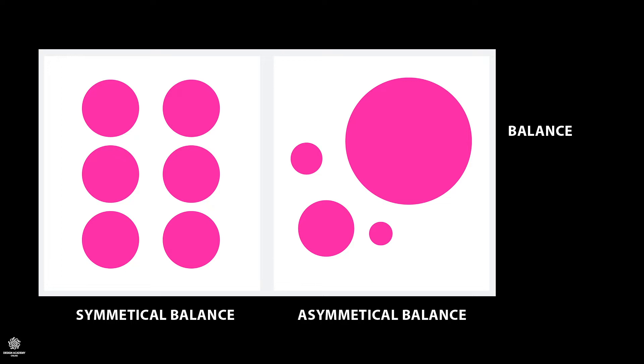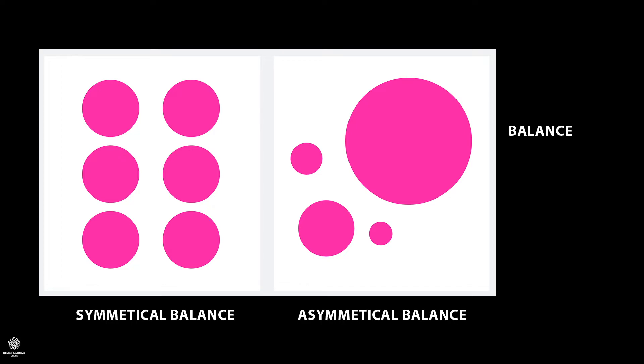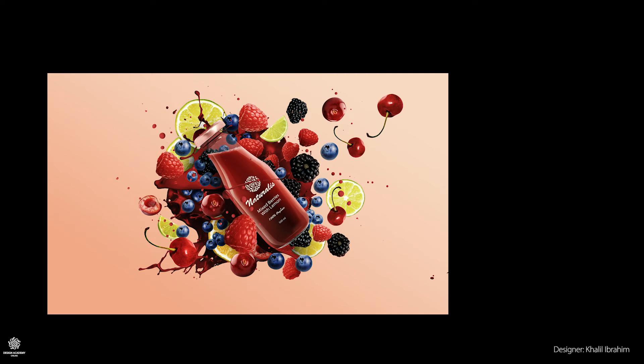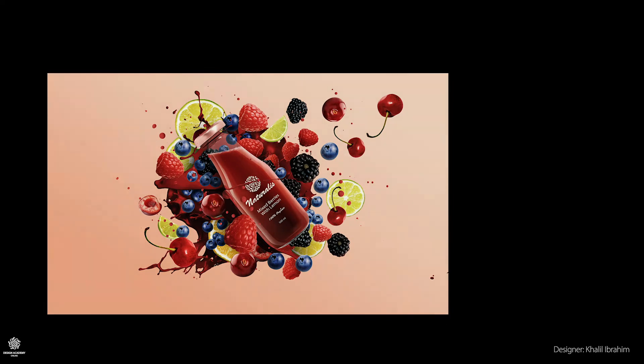The other type is called asymmetrical balance, which concerns creating balance without symmetry. A good technique for mastering asymmetrical balance is to think of each element as having a weight to it — smaller objects might weigh less than larger objects, and heavily textured elements might weigh more than flatly colored elements. Balance these weighted elements out until you reach an effective equilibrium.